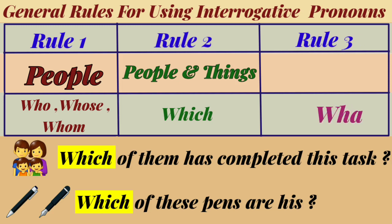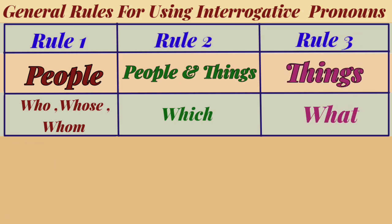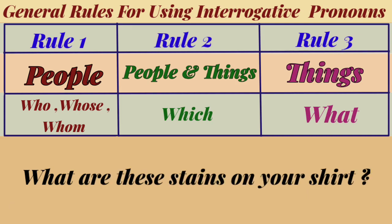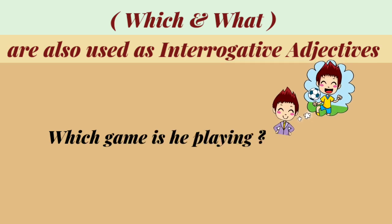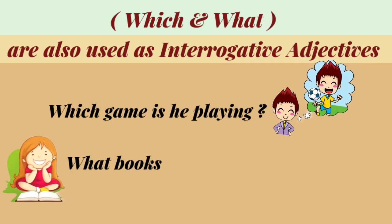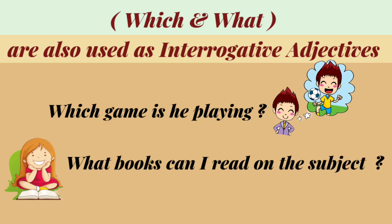Rule number three: what is used for things only. For example, what are these stains on your shirt? Students, interrogative pronouns which and what are also used as interrogative adjectives with nouns. For example, which and what are used with nouns — game and books respectively.